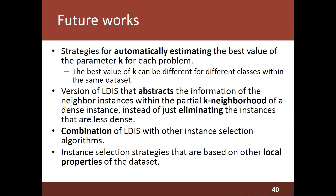As future work, we plan to investigate strategies for automatically estimating the best value of the parameter K for each problem. We also consider the hypothesis that the best value of K can be different for different classes within the same dataset. We also plan to investigate a version of LDIS that abstracts the information of the neighbor instances within the partial K neighborhood of a dense instance, instead of just eliminating the instances that are less dense. Additionally, we plan to investigate how LDIS can be combined with other instance selection algorithms, and the performance of LDIS encourages the investigation of novel instance selection strategies based on other local properties of the dataset.